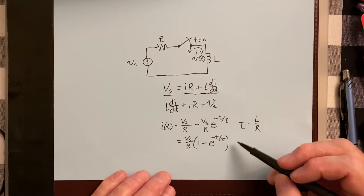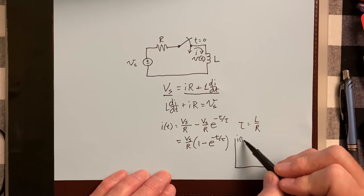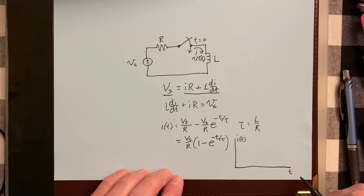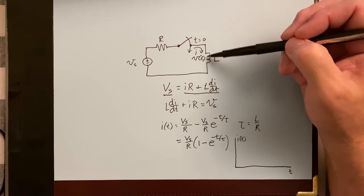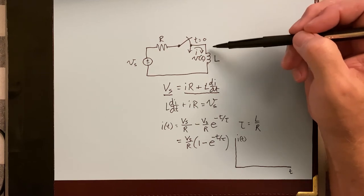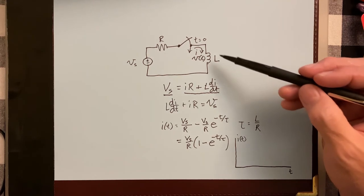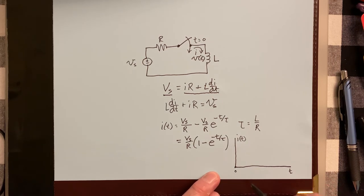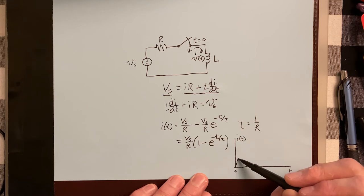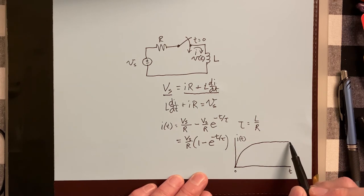We can simplify this a little bit by factoring out V sub S over R, giving us 1 minus e to the negative T over tau. If you were to graph this with I(T) on the vertical axis and T on the horizontal, at T equals zero the switch is closed. The current is opposed by the back EMF generated by the inductor — you cannot have an instantaneous change in current, so the current starts at zero at T equals zero.